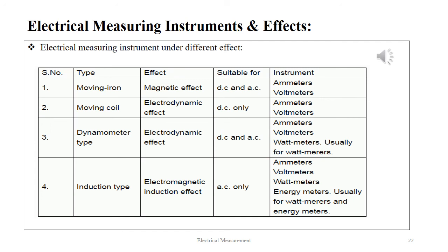Here we see four types of instruments under electrical measurement. Moving iron instruments are based on the magnetic effect, suitable for both AC and DC, with ammeters and voltmeters as applications. Moving coil instruments are based on the electrodynamic effect and are suitable for only DC, with ammeters and voltmeters as applications. Dynamometer type uses the electrodynamic effect, suitable for both AC and DC, and is categorically used for wattmeters. For the induction type, the electrodynamic effect is the driving principle and it is only applicable for AC; ammeters, voltmeters, wattmeters, and energy meters are applications, but they are mainly used as wattmeters and energy meters.